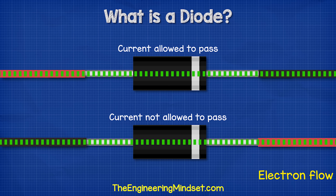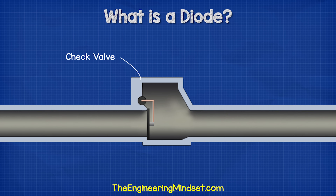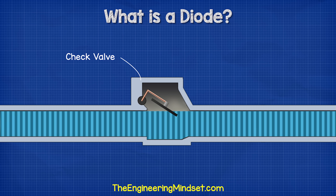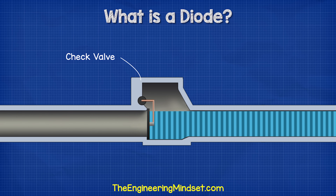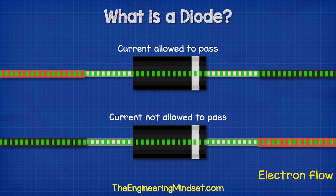A diode allows current to flow in only one direction in a circuit. If we imagine a water pipe with a swing valve installed, as water flows through the pipe it will push open the swing gate and continue to flow through. However, if the water changes direction, the water will push the gate shut and this will prevent it from flowing. Therefore water can only flow in one direction. This is very similar to a diode — we use them to control the direction of current in a circuit.